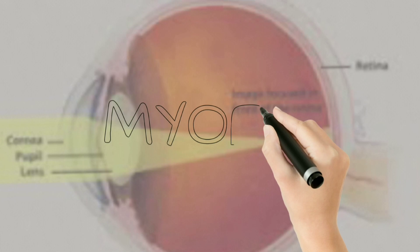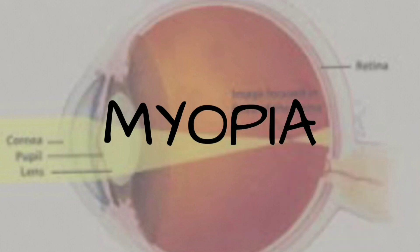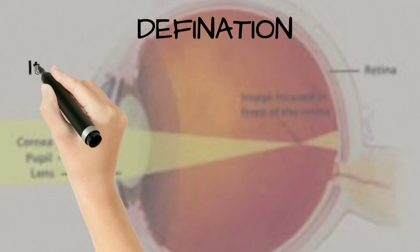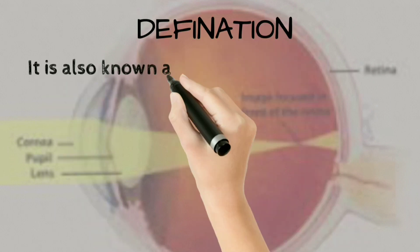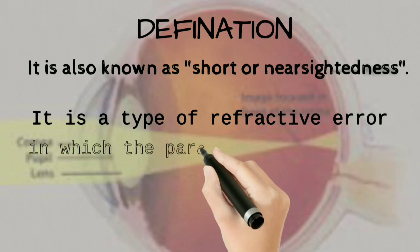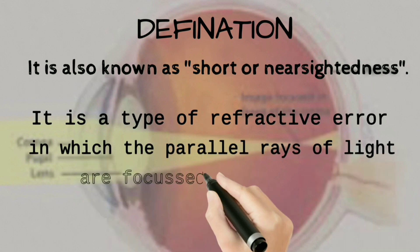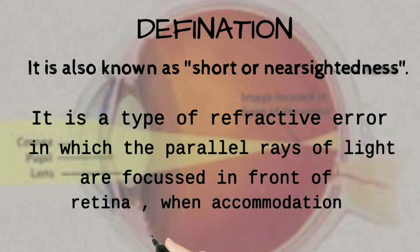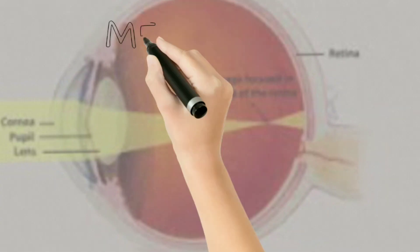Hello everyone. Today we are going to understand the mechanism of production of myopia. First, we learn about the definition of myopia. It is also known as short-sightedness or nearsightedness. It is a type of refractive error in which parallel rays of light are focused in front of the retina when accommodation is at rest, as shown in previous videos.